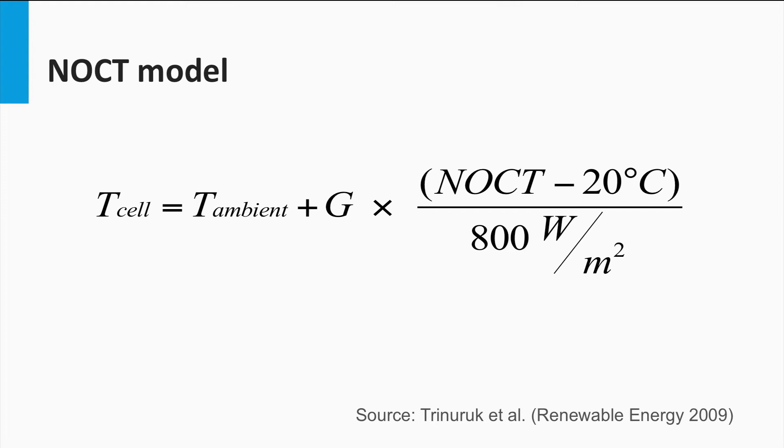As can be seen from this equation, the cell temperature is not only a function of the ambient temperature, but also of the irradiance. This makes things interesting, because if we consider the irradiance and temperature changes over a calendar year, we would see an effect of both irradiance and temperature across the seasons.